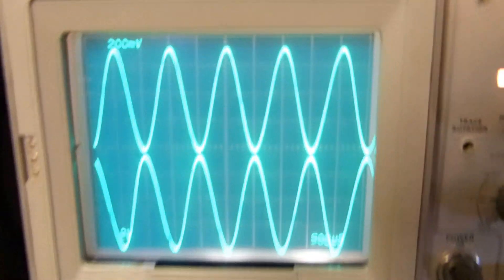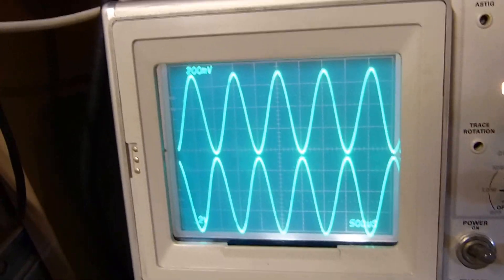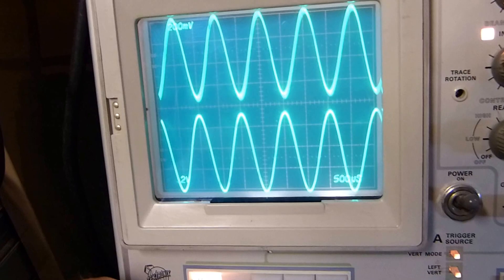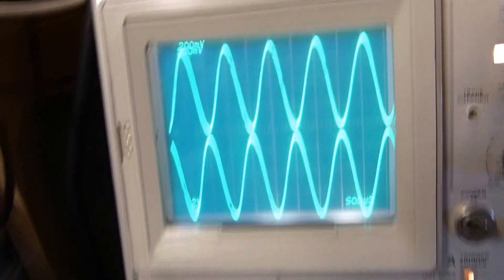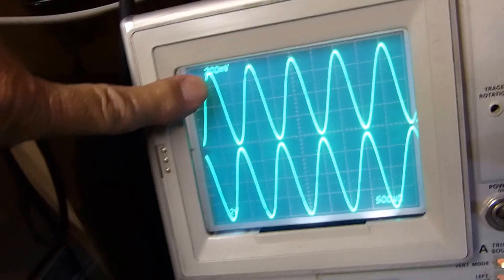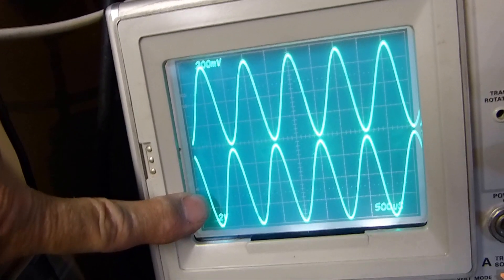What we get out is this right here: two identical signals in amplitude and 180 degrees out of phase. See, this is the input signal, there's the signal on the other side of the transformer. This signal is between the center tap and one side of the transformer, this is between the center tap and the other side of the transformer.